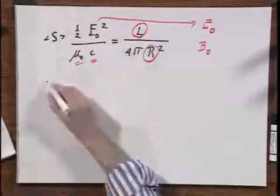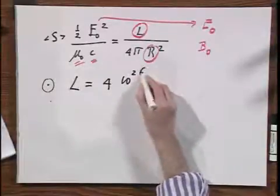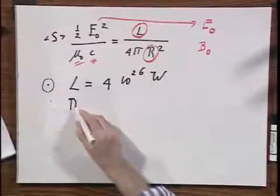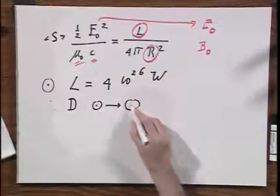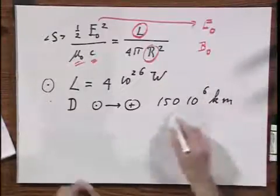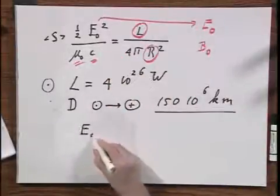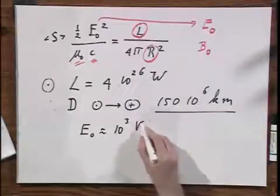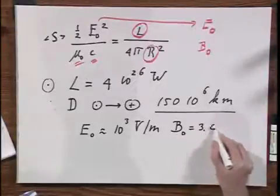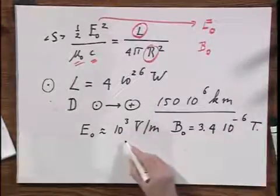Let us take the sun. The sun is a very powerful source. It has a luminosity of 4×10²⁶ watts. And the distance from the sun to the earth is 150 million kilometers. Being an astrophysicist, I just happen to remember that. When you apply the above, you will find that E₀ is about 1,000 volts per meter at the distance of the earth. And that B₀ seems significantly small, 3.4×10⁻⁶ Tesla. The reason being that you have to divide this by c.